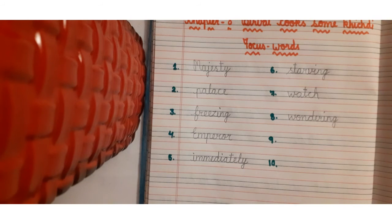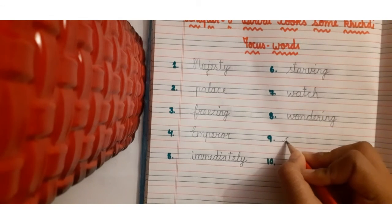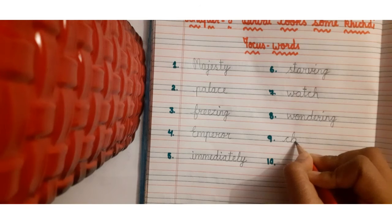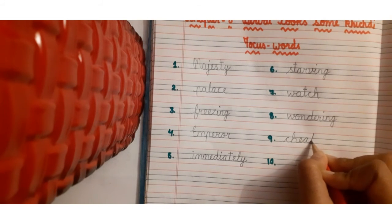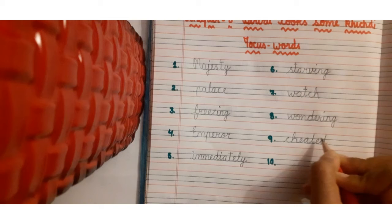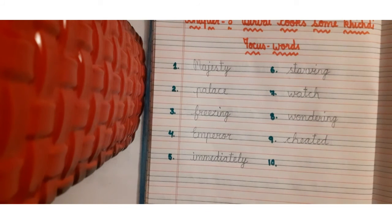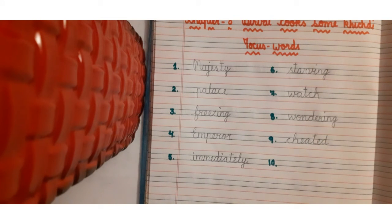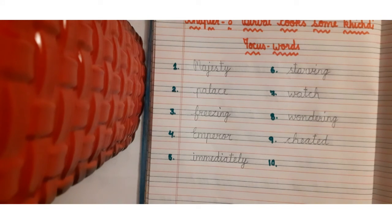Next is cheated. Cheated means kisi ko dhoka dena. Or in other words you can say making someone's fool, kisi ka bewakoof bana dena.